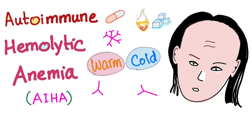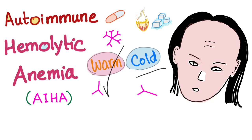Hey everybody. In the previous video we discussed immune hemolytic anemia. Today we'll talk about autoimmune hemolytic anemia, and there are two different subtypes: warm and cold. Today we'll discuss the warm and leave the cold for the next video.